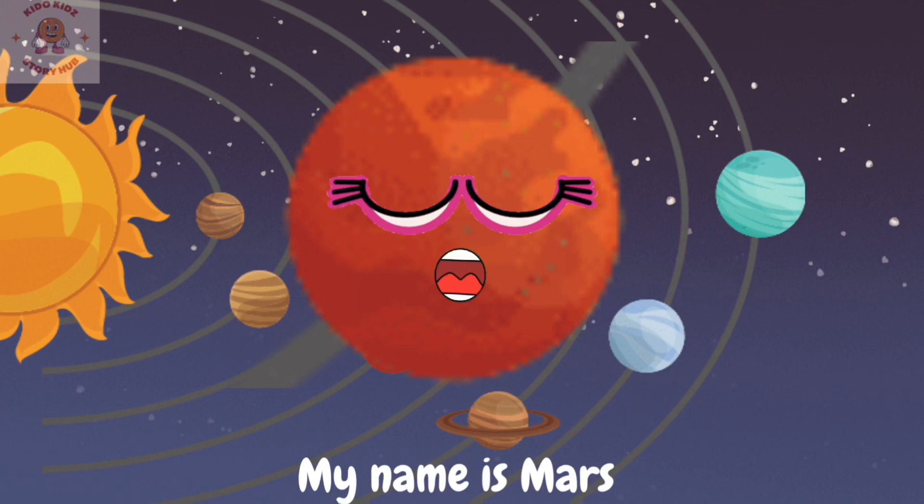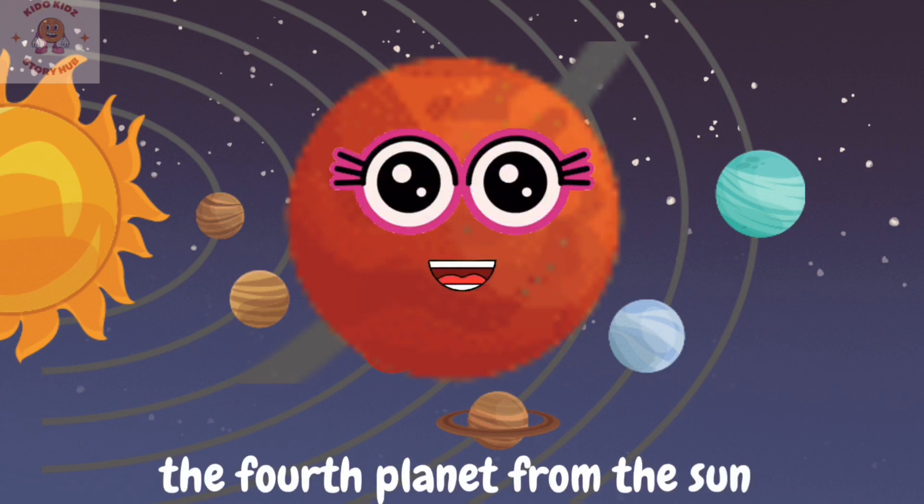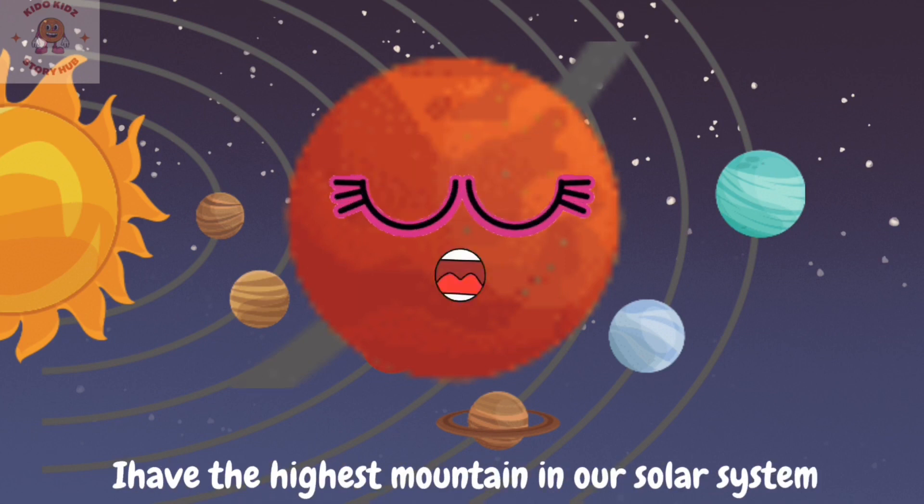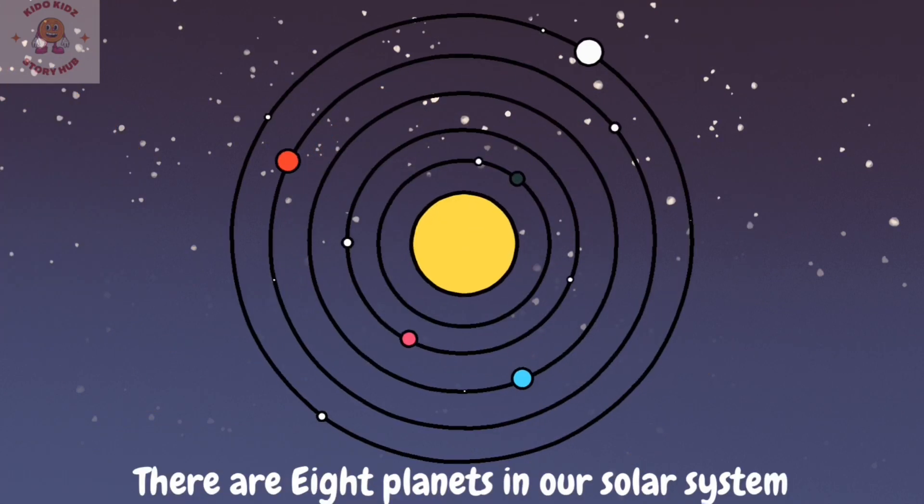My name is Mars. I am red in color, the fourth planet from the sun. I have the highest mountain in our solar system, a volcano named Olympus Mons.